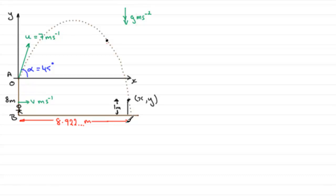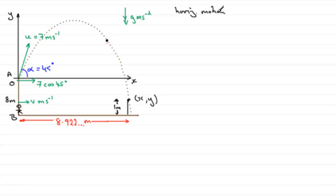We first need to find the time taken for the ball to reach that point, and we do that by considering the horizontal motion. We know there's no acceleration horizontally, so it moves at a constant speed of 7 cos 45 degrees. So, looking at the horizontal motion, we have that the distance 8.922 is equal to the speed 7 cos 45 degrees multiplied by the time T. Using the equation S equals UT: